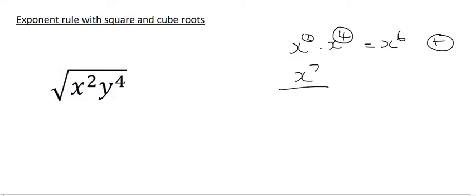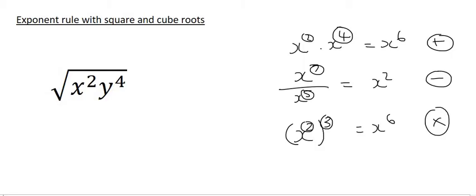Then we've also looked at ones where we have to subtract the exponents, and so that gave us x to the power of 2. Then we looked at the power rule, which says that if we have something like this, then we have to multiply. And so what haven't we done?